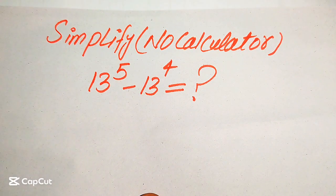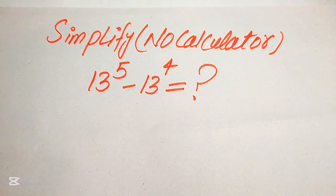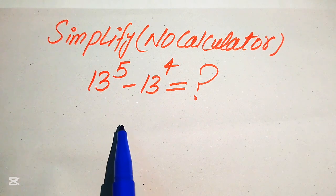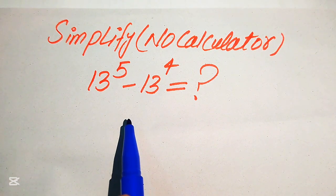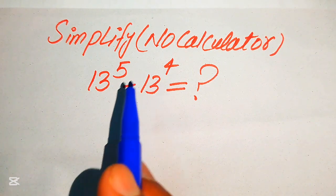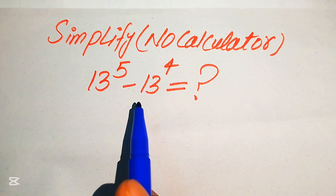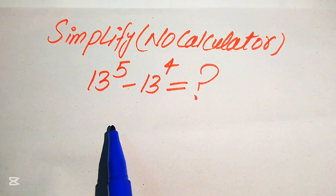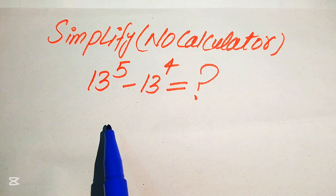How to simplify this nice algebraic expression. If we have 13 to the power of 5 minus 13 to the power of 4, we write this algebraic expression into the simplified form.